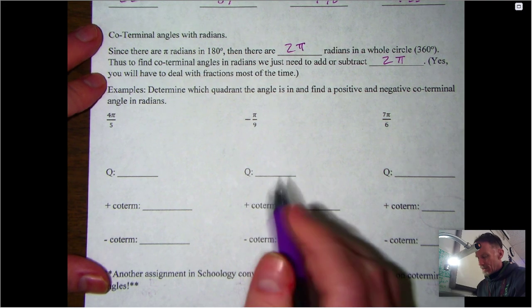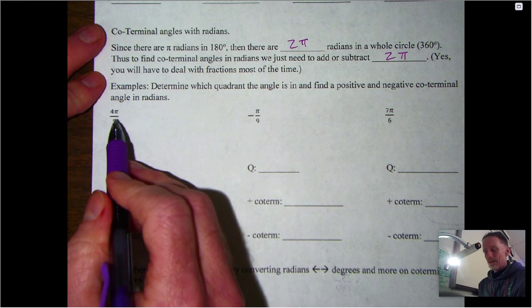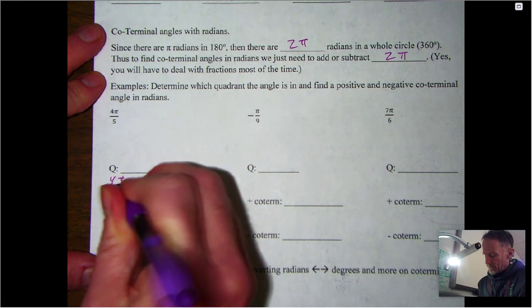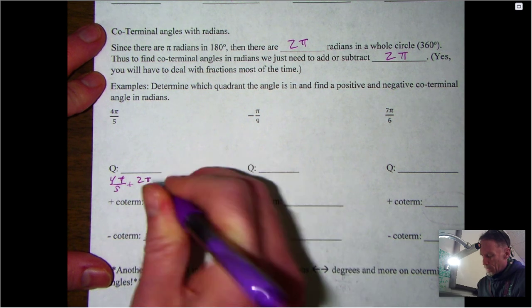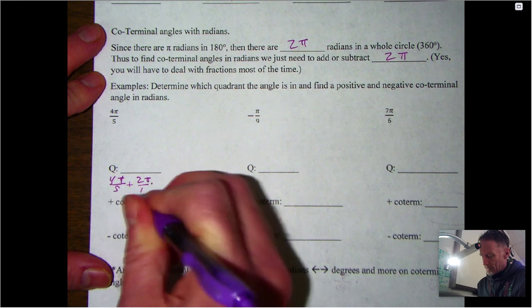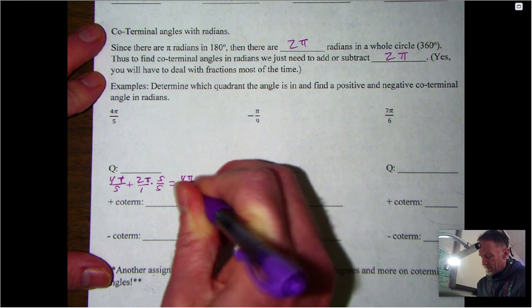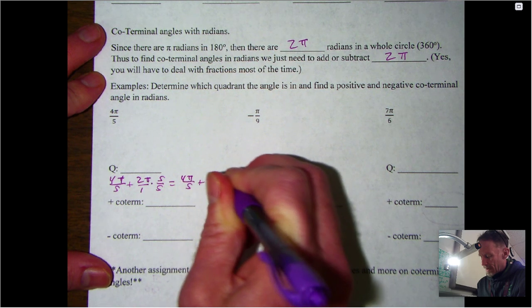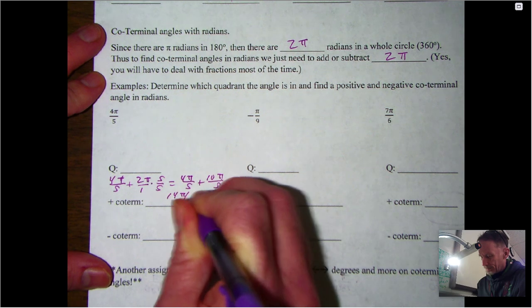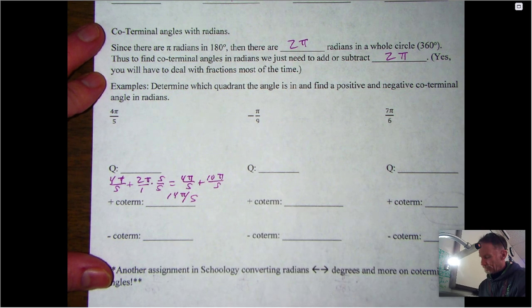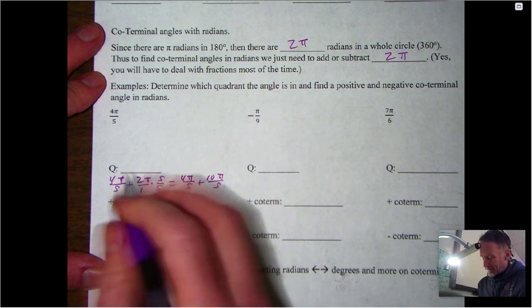Plus 2π. We can just multiply that by our common denominator, which in this case is 5, so that becomes 4π over 5 plus 10π over 5, which is 14π over 5. And then for the negative co-terminal, we've already done the work, so now it's 4π over 5 minus 10π over 5, which is -6π over 5.